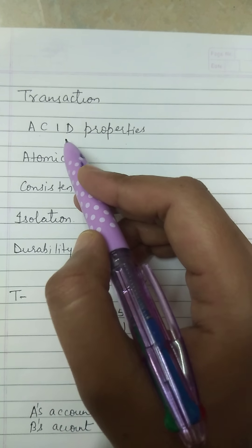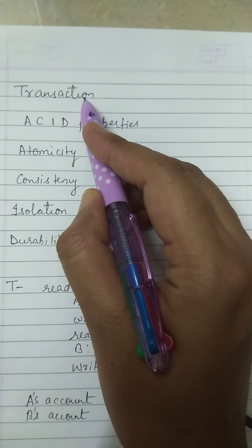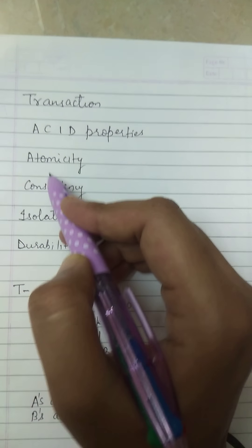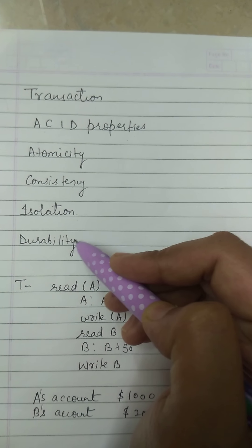Dear students, today we will discuss ACID properties of a transaction. ACID properties are atomicity, consistency, isolation, and durability.